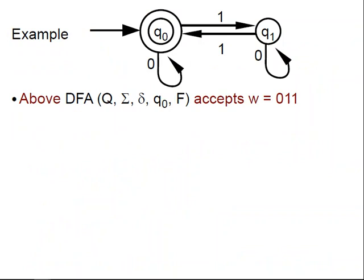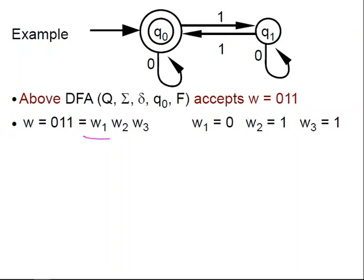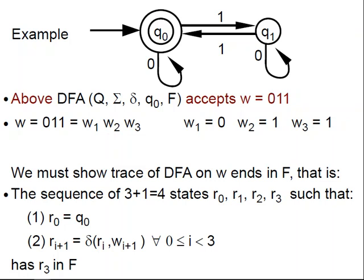As usual, let's see an example. Here is a DFA. We claim that this DFA accepts w equal to 011, so let's see. Here is, so let's match it with our previous definition. Here is how you write w: 0, 1, 1. I'm going to write the three symbols of w, and we must show that the trace of the DFA on w ends in F.